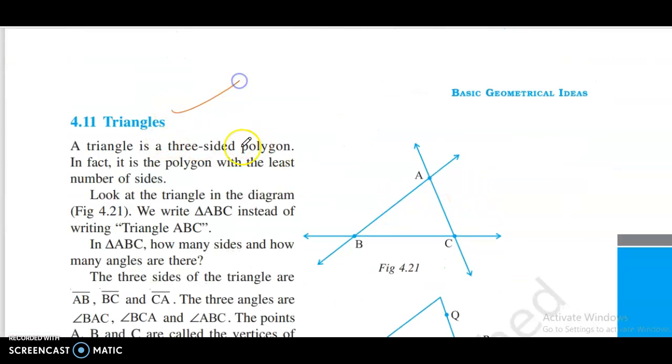Triangles. A triangle is a three-sided polygon. In fact, it is a polygon with the least number of sides. Look at the triangle in the diagram, figure 4.21. We write triangle ABC. How many angles are there?